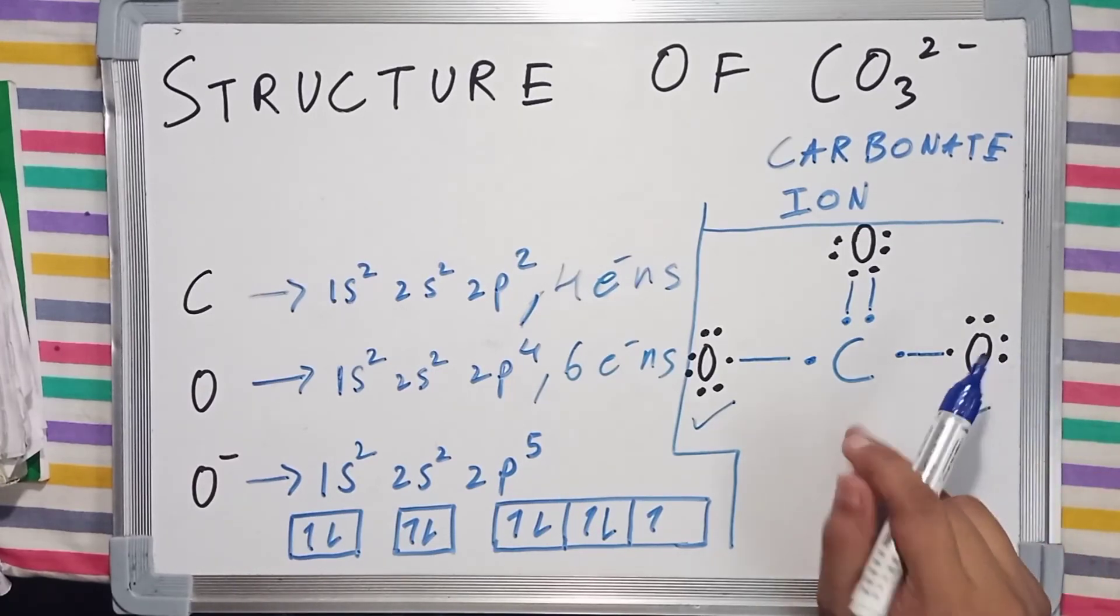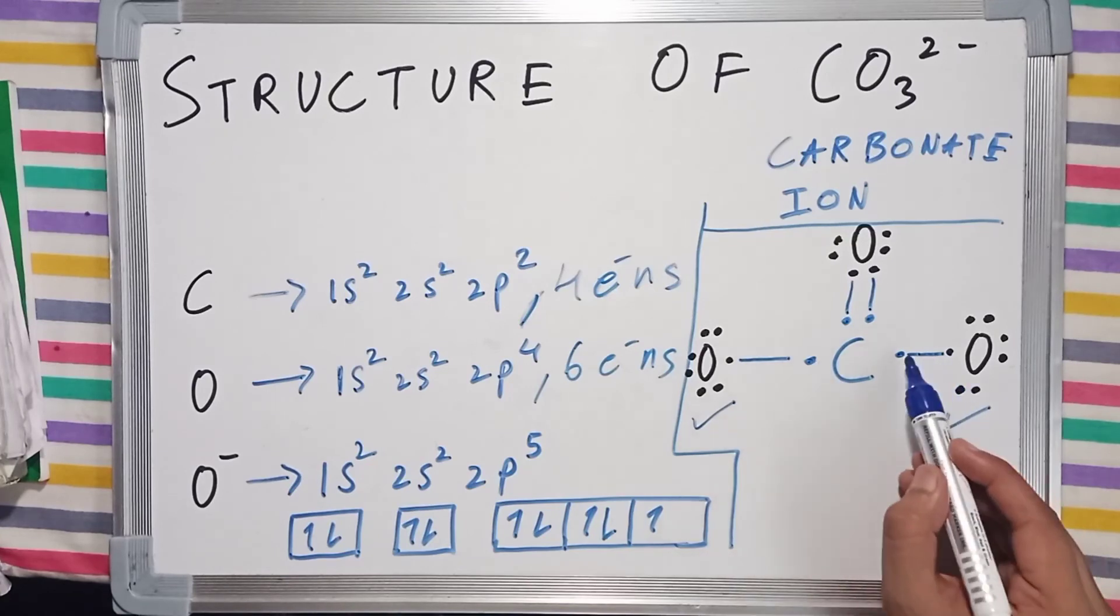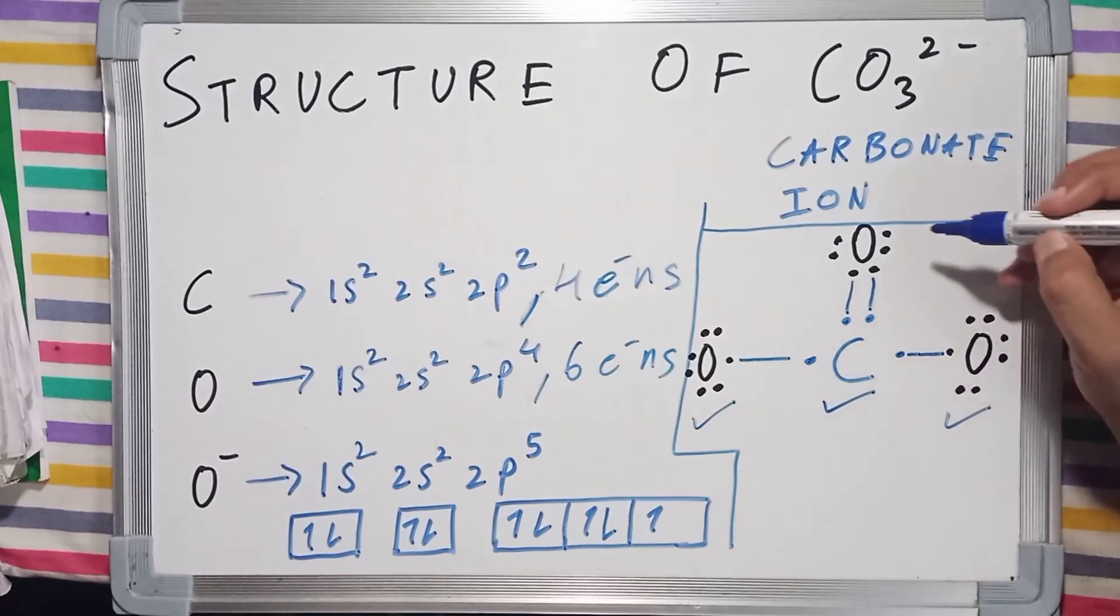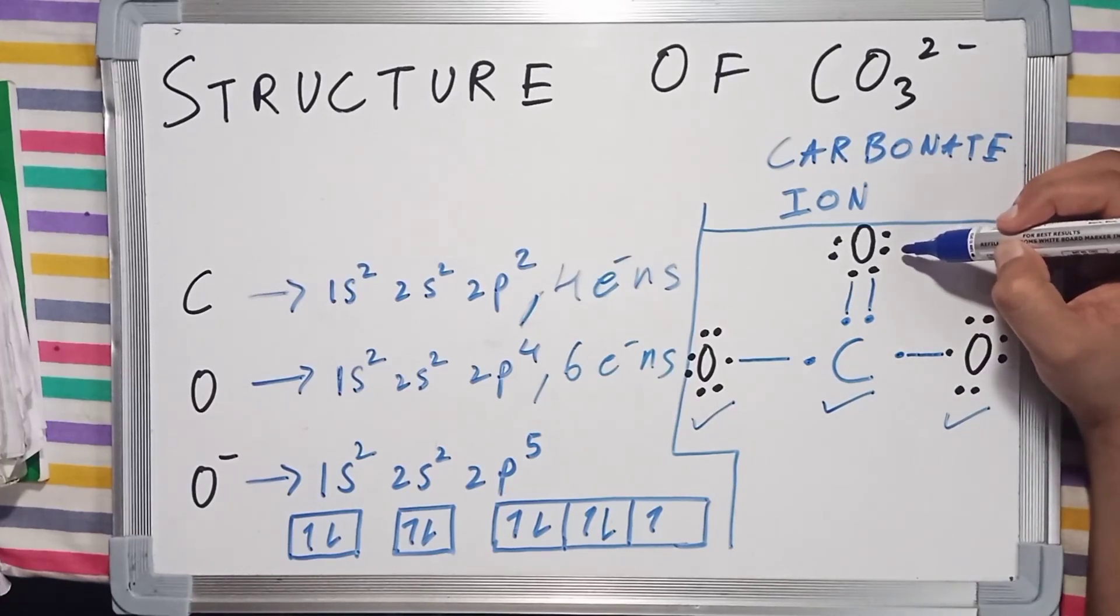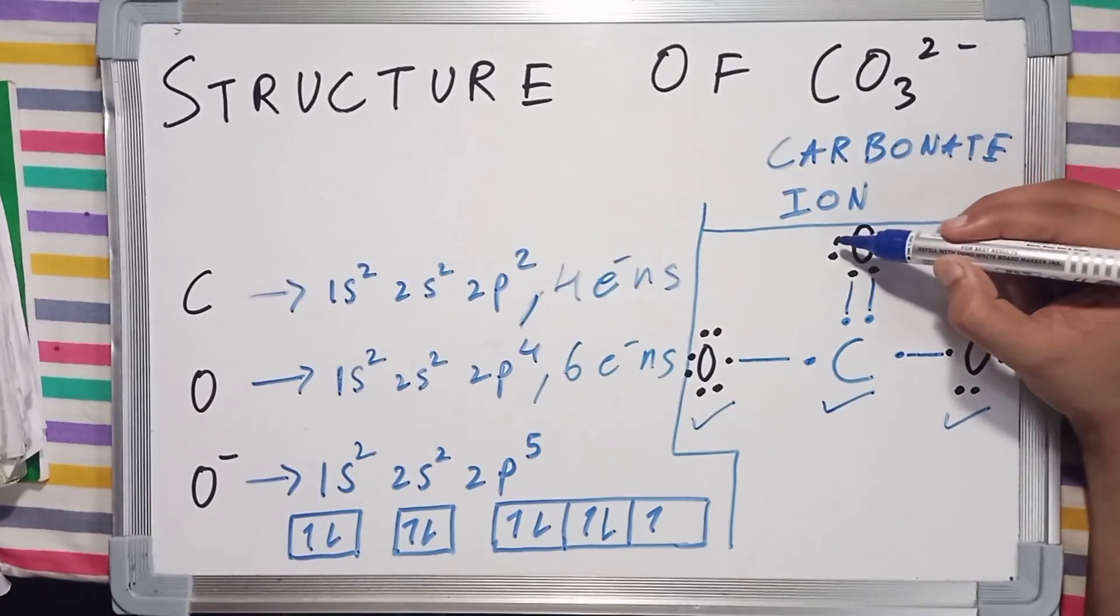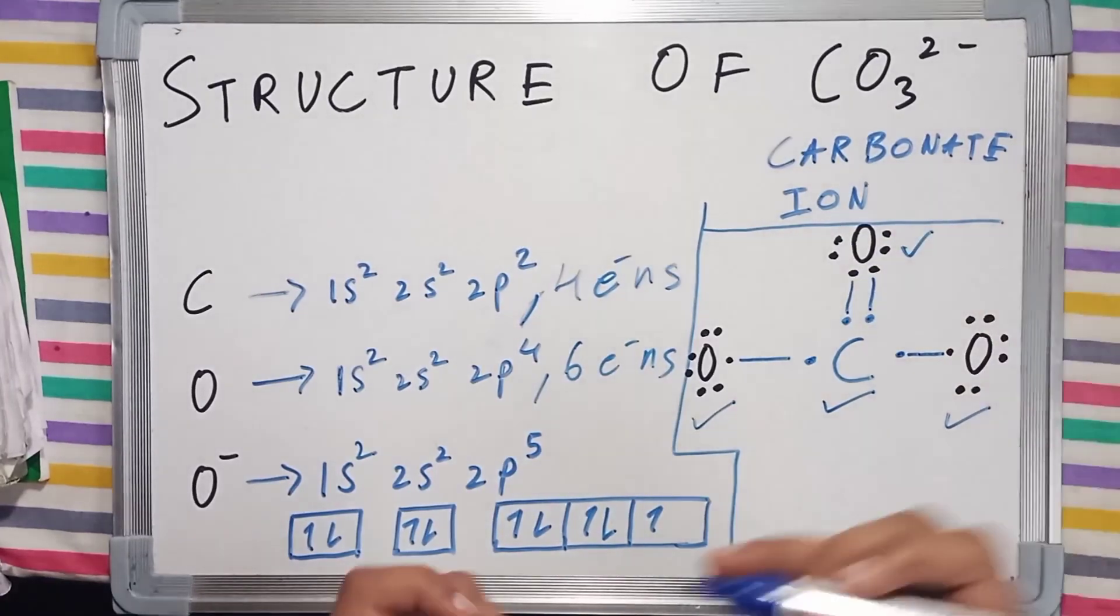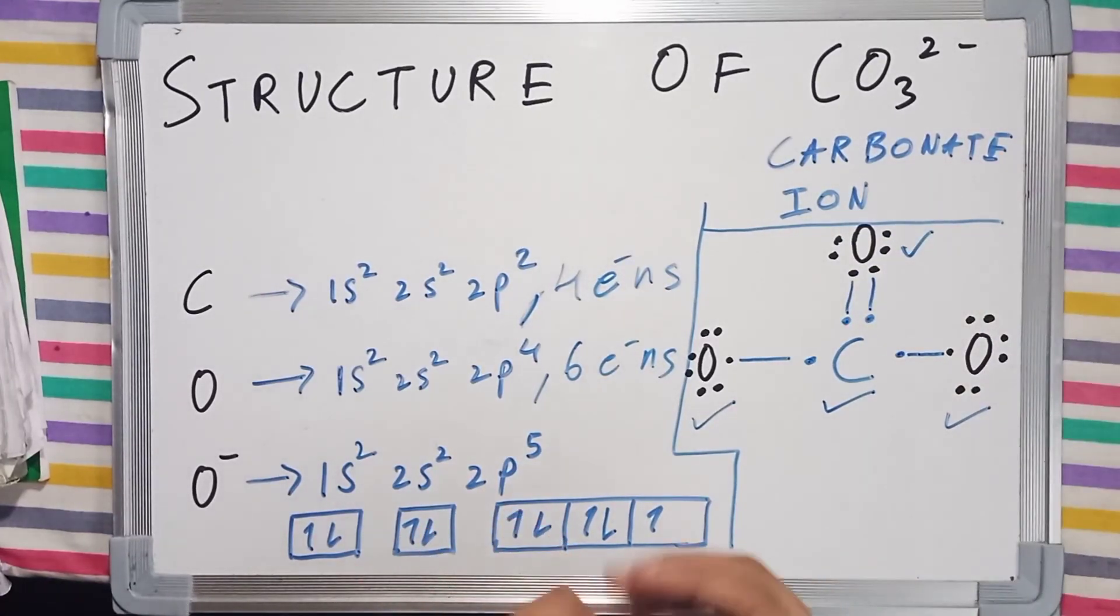Now let's check carbon: 1, 2, 3, 4, 5, 6, 7, 8. Its octet is also complete. And for the last atom: 1, 2, 3, 4, 5, 6, 7, 8. Its octet is also complete.